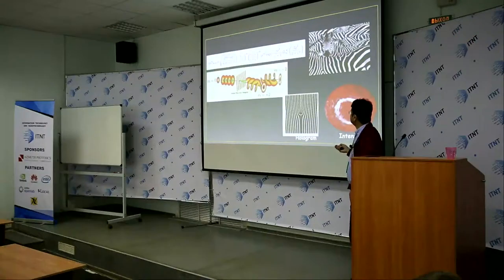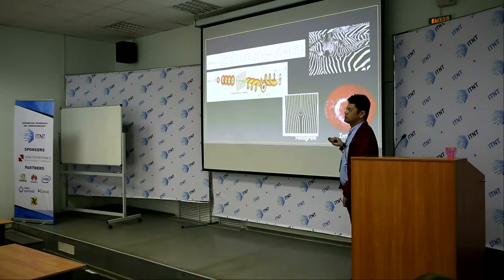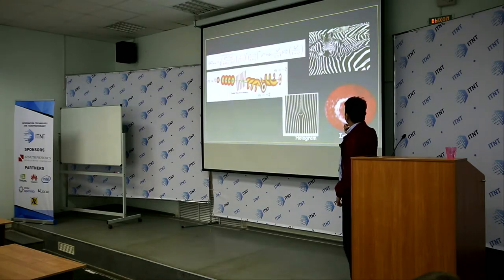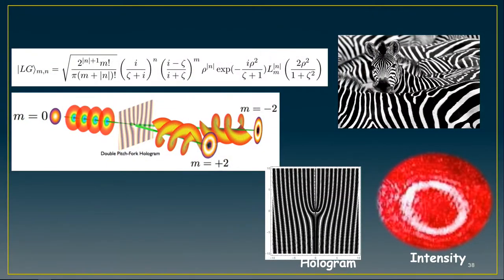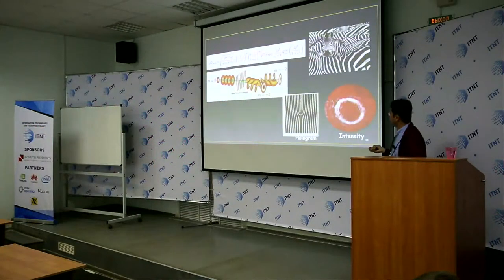This is the Laguerre-Gaussian mode. This is the formula of the Laguerre-Gaussian mode. In nature, we can see it — for example in the pattern of the zebra body. And we can get this hologram using a video projector from the phase of the Laguerre-Gaussian mode with well-defined orbital angular momentum.